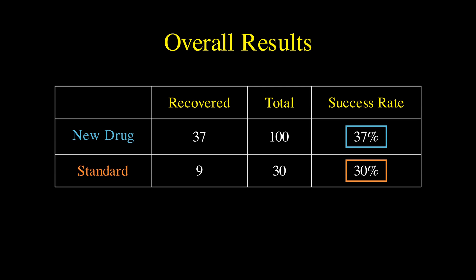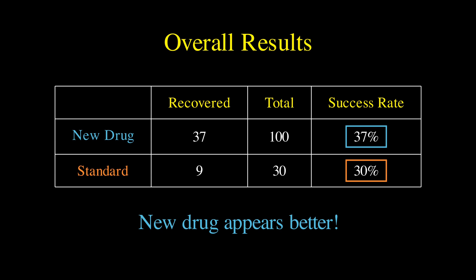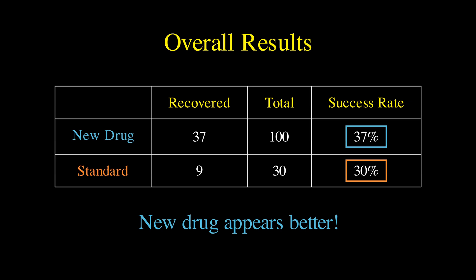By looking at these numbers, it appears the new drug is better, since 37% is greater than 30%. But here's where things get interesting. When researchers separate patients by the severity of their condition, a completely different picture emerges.